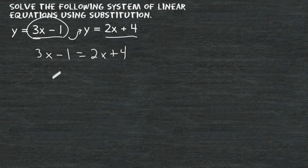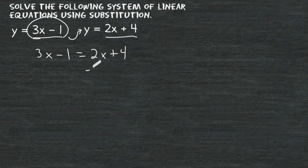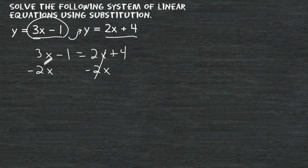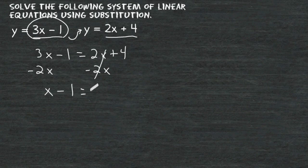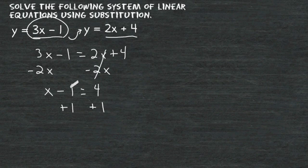So what we want to do now is get x all by itself on the left-hand side. Let's start by moving this 2x over to the left-hand side. To get rid of it on the right-hand side, we subtract 2x, making those two terms cancel out to 0, and we balance our equation by doing the same thing on the opposite side. 3x take away 2x is 1x. We still have minus 1 on the left and positive 4 on the right. To get x by itself, we add 1 to both sides. That cancels the minus 1, leaving us with x equal to 4 plus 1, which is 5.